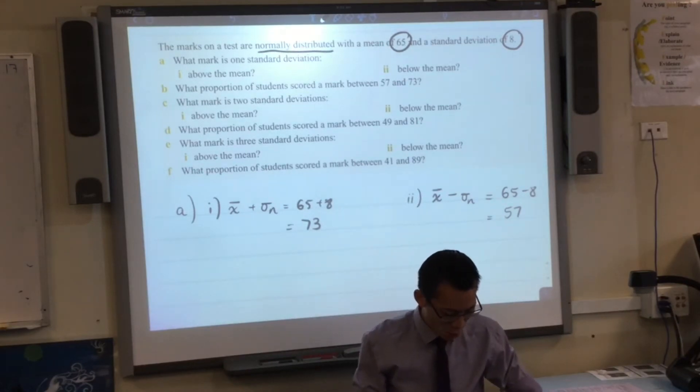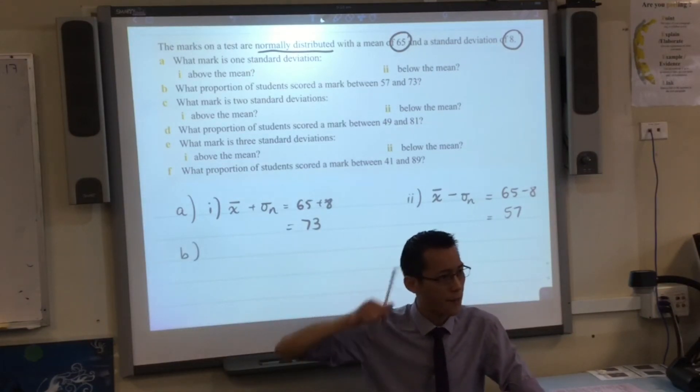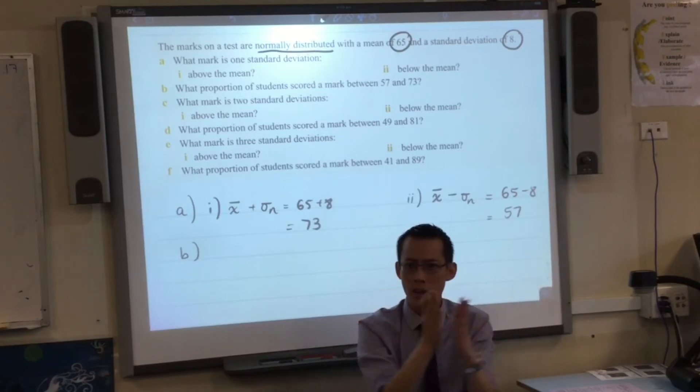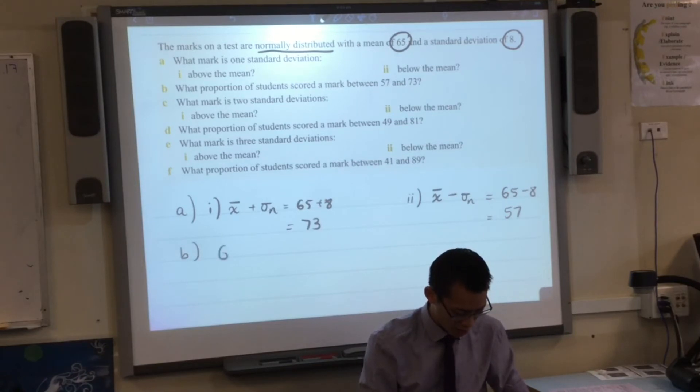Okay, so now I know the range from below one standard deviation to above. So now you can see why they talk about it, like what's the relevance of B? What proportion of students is between these two marks? Well, this is the first graph that I gave you, right? What proportion of students, what percentage is between? Yeah, it's 68%. So I would just say 68% of students.